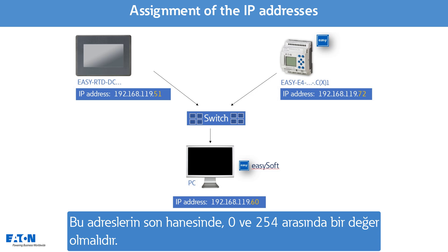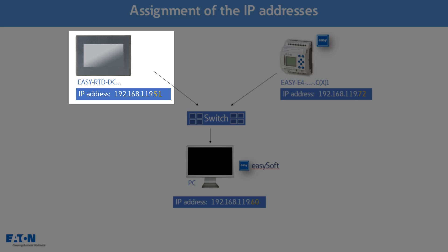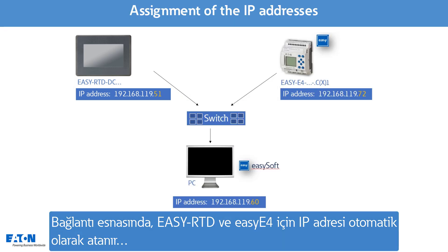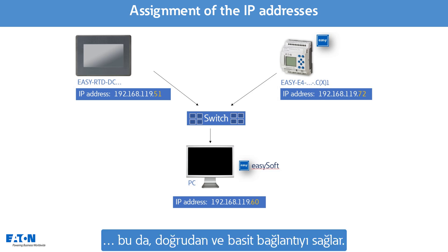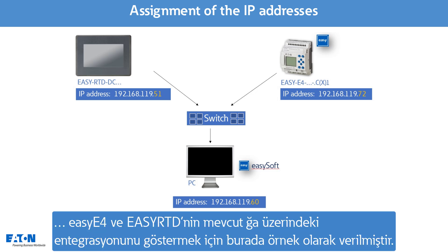The last digit can be set between 0 and 255. For the EZ-RTD, the end address 51 is selected here. A brief note: the EZ-RTD and the EZ-E4 are set to Auto-IP when delivered, which enables a direct, simple connection. The variant with a fixed IP address is shown here in order to demonstrate the integration of the EZ-E4 and the EZ-RTD in an existing network.